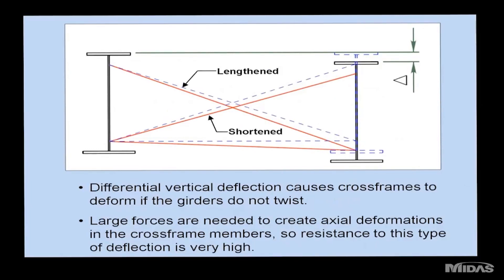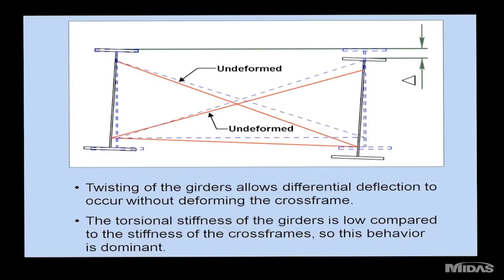Here's a simple diagram of how the cross-frame functions. If you have differential deflection between adjacent girders and assume the girders don't twist, you need axial deformation in the cross-frame members — and it takes a lot of force to deform those members axially, so resistance to this movement is very high. If instead the girders twist, the cross-frames don't have to deform; they can just go along for the ride. Since I-girders are torsionally very flexible, they offer little resistance to this movement. This is the common behavior seen in skewed and curved structures.